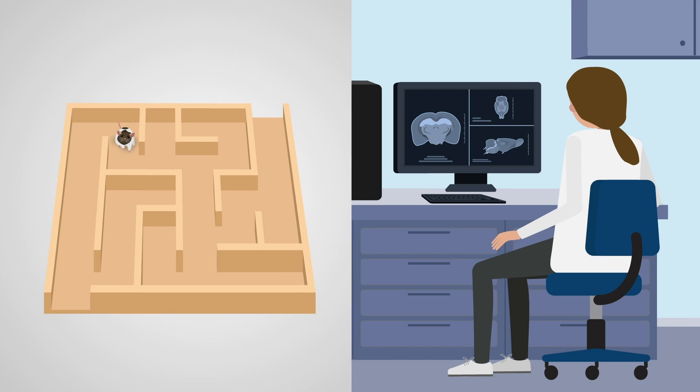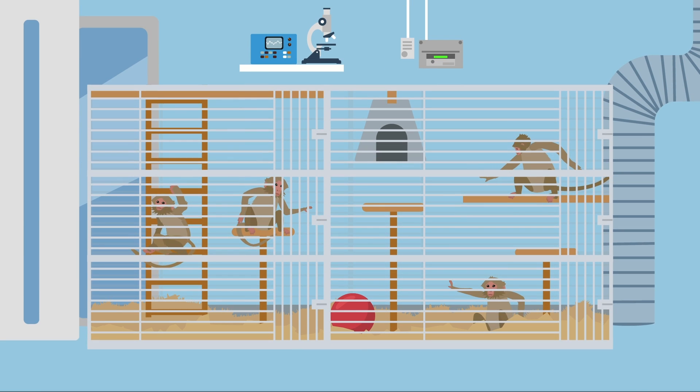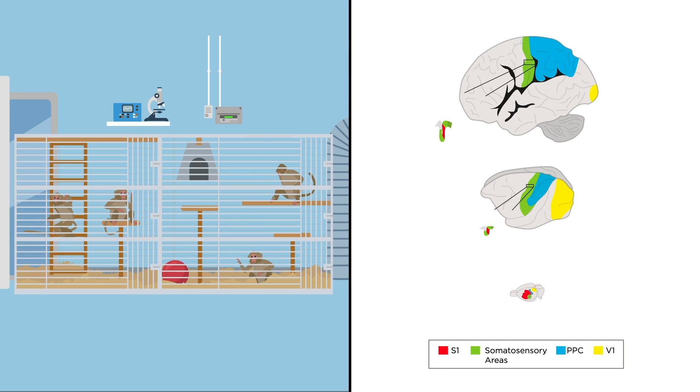Rodent studies have revealed important active interactions between brain areas called the thalamus and the cortex when rats are navigating the environment. However, for some questions we need to use animals with brains more similar to humans.